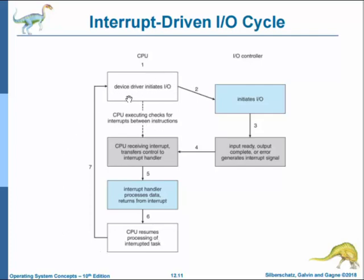In the interrupt-driven I/O cycle: the device driver initiates I/O, the I/O controller initiates the I/O, input-ready/output-complete/error generates an interrupt signal, the CPU receives the interrupt and transfers control to the interrupt handler, the handler processes the data and returns from interrupt, and the CPU resumes processing of the interrupted task. Most CPUs have two interrupt request lines: the non-maskable interrupt (reserved for unrecoverable events such as memory errors) and the maskable interrupt (which can be turned off by the CPU before critical instruction sequences and is used by device controllers to request service).